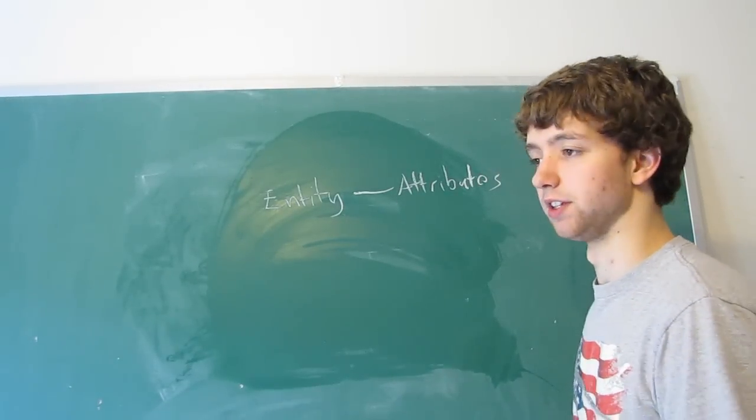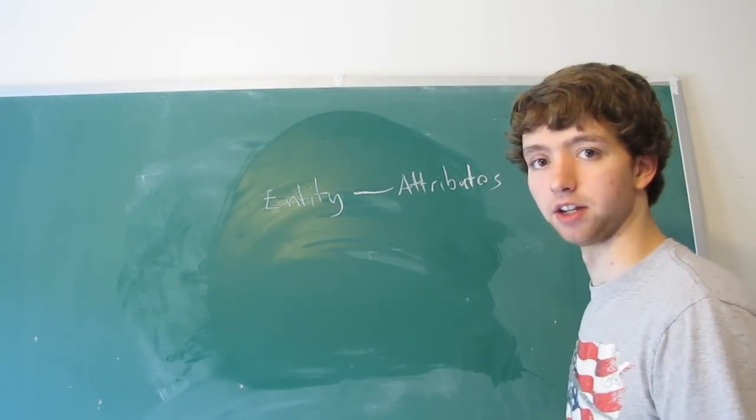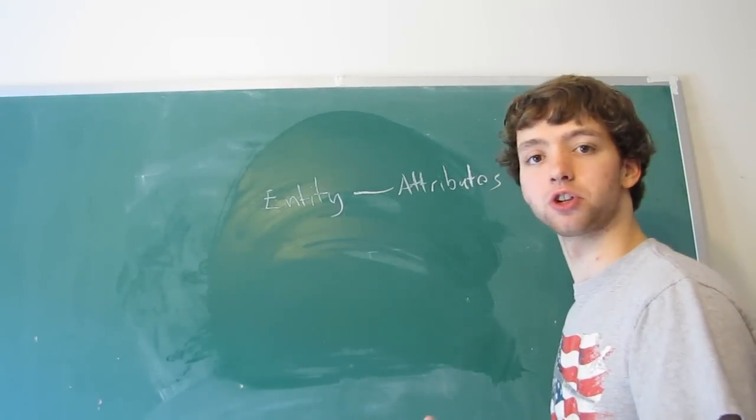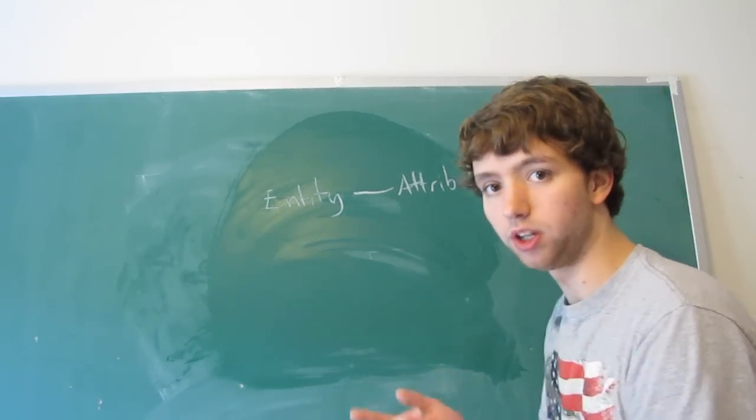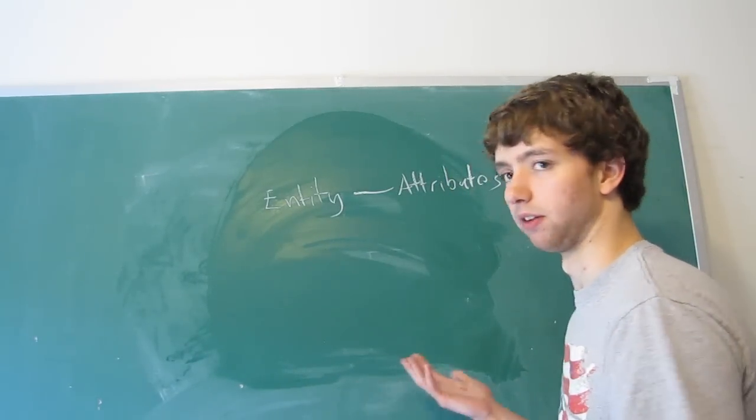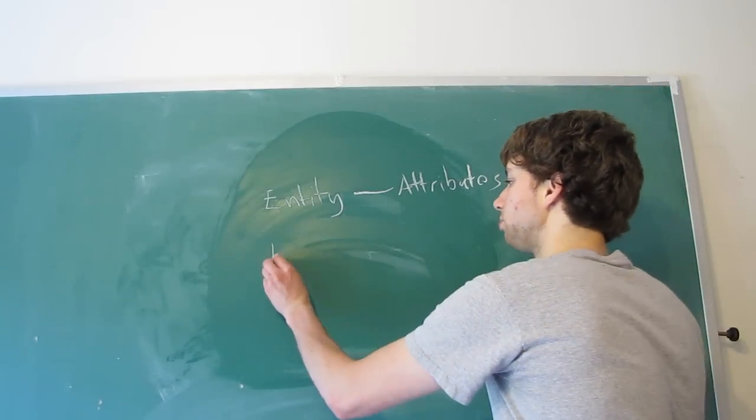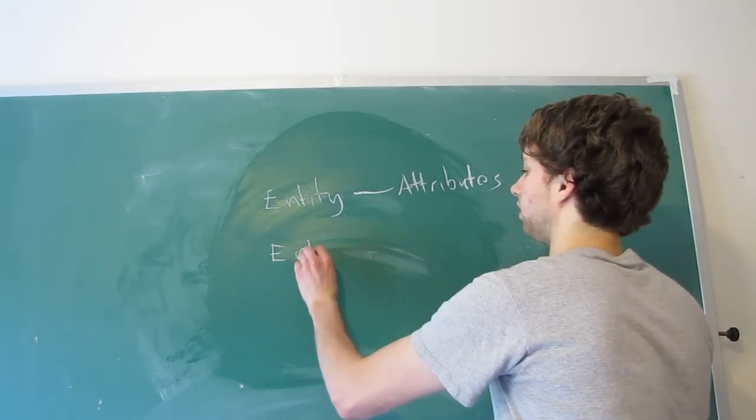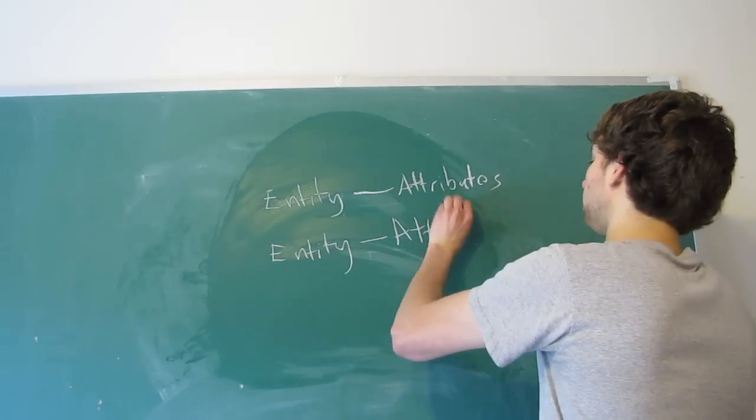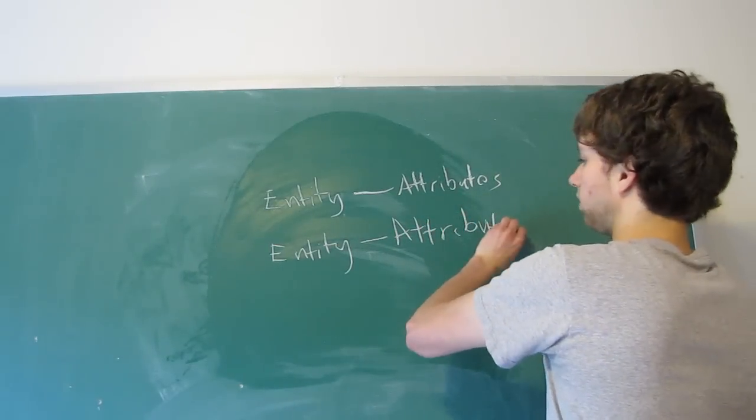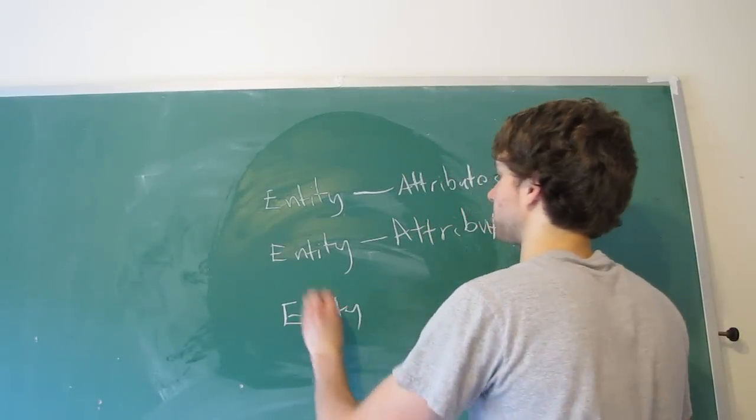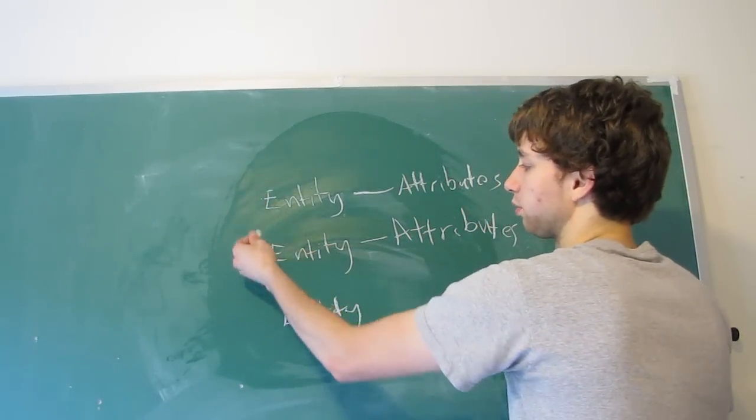And then we have a different entity. So that is part of our database design. We figure out all of the things we're storing data about. Think of like a college. We can store information about the student, the professor, the classes, the faculty, the whatever else. So we can have multiple entities.